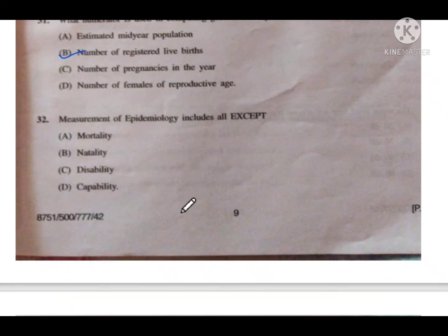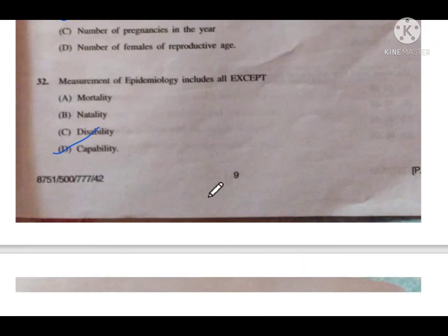Question number 32: Measurement in epidemiology includes all except — option A is mortality, B is natality, C is disability, and D is capability. Option D — capability — is the correct answer; capability is not measured in epidemiology.